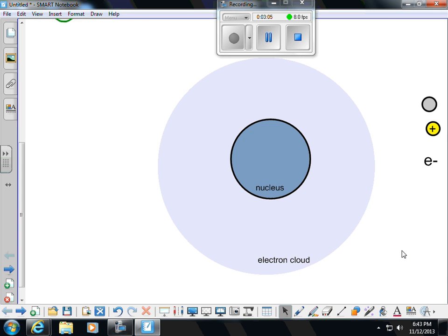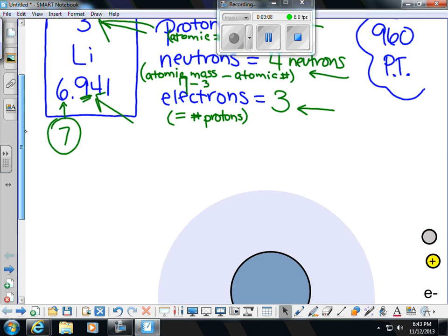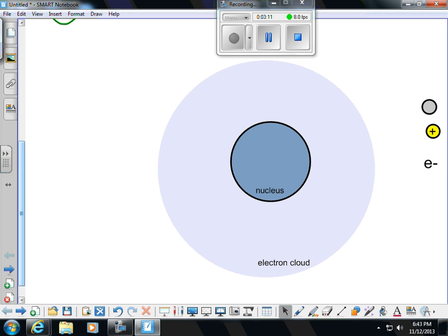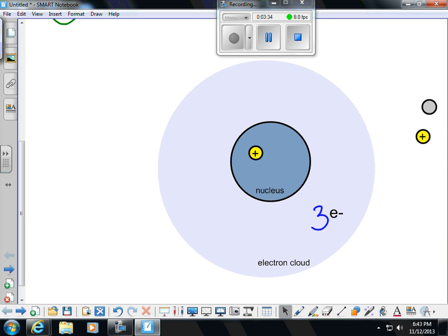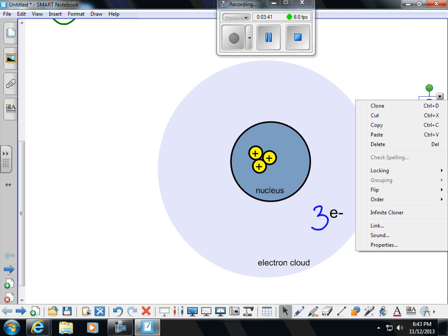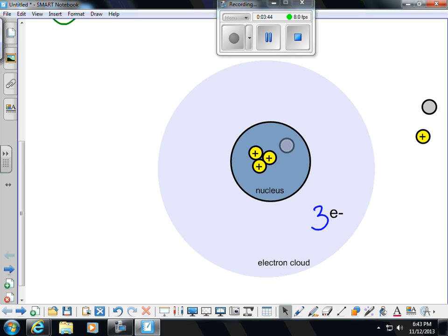We have 3 protons and 3 electrons. So let's take care of that first. I'm going to put my electron symbol here, and we're going to write the number 3 next to it so we know we have 3 electrons in the electron cloud. We have 3 protons, and we need to create 3 protons, which is circles with pluses in them. Then we have 4 neutrons, which we are going to shade those so we can tell the difference.